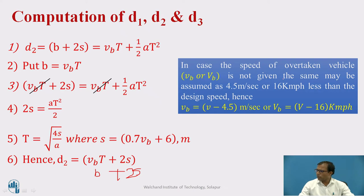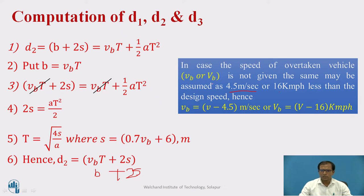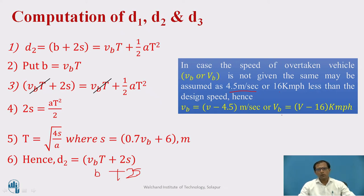If the speed of the overtaken vehicle VB is not given, it can be assumed as 4.5 meters per second less than the design speed, or 16 KMPH less than the design speed. So subtract 4.5 (if in m/s) or 16 (if in KMPH) from the design speed to get VB, the speed of the slow-moving overtaken vehicle.